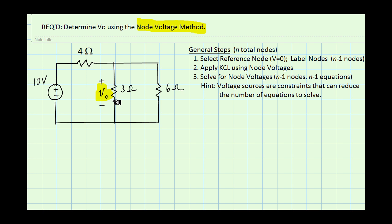Remember the general steps of the node voltage method for a circuit with n total nodes: first, identify the nodes, then select one of those nodes as a reference node and label all the other nodes. We're going to apply KCL using node voltages, and then solve for the node voltages. Typically there will be n minus 1 nodes with unknown voltages, so we need n minus 1 equations.